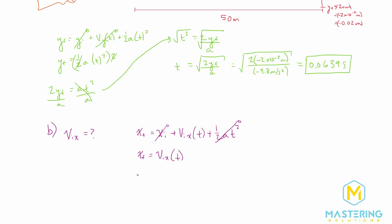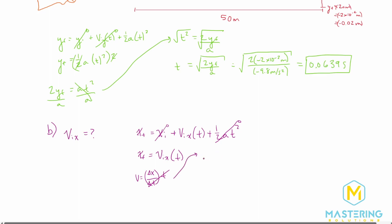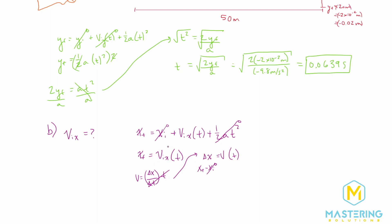So we have x final equals velocity in x times time. This looks a lot like the velocity equation — because it is. The velocity equation is v equals Δx/Δt; rearranged, Δx equals v times t. Since x initial is 0, Δx reduces to x final, giving us the exact same form. The kinematic equations always give you the same answer as long as you do the math correctly, so don't stress if you picked a different equation.